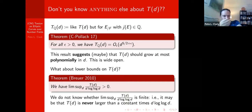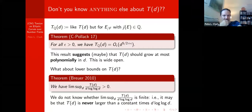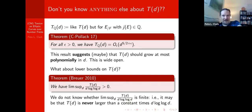As soon as you see this result, you say you're very happy to know that the limsup is positive — but is it also finite? If it were finite, that would tell you T of D is big-O of D log log D. We really don't know, but if you were going to guess the asymptotic upper order of T of D, I think it would be reasonable to guess D log log D — the smallest thing you could possibly guess.